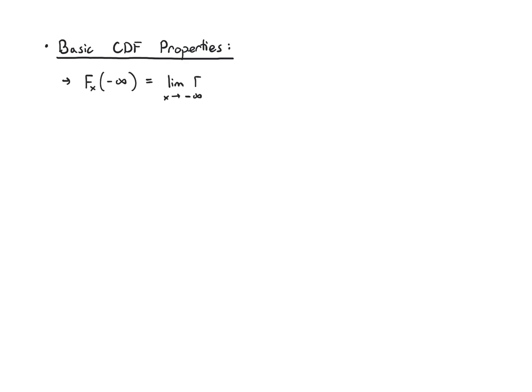There are a few basic properties. First, if I plug in negative infinity, I get zero back, because you're not going to see a value of the random variable less than or equal to negative infinity — it takes values larger than that, since it lives on the real line rather than the extended real line. If I plug in positive infinity, I get 1, and that's normalization, because the total probability of something happening has to be 1.